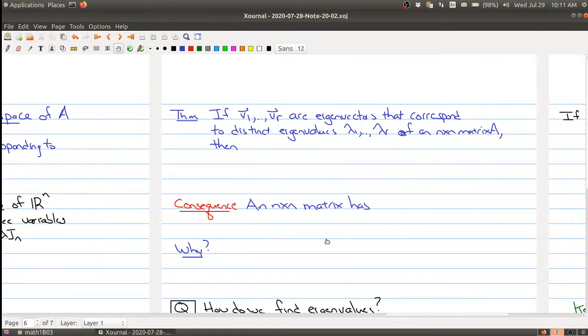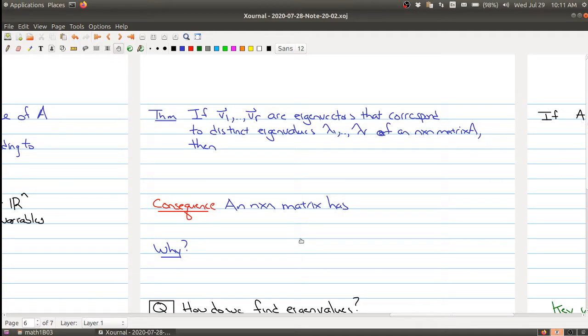Here's another nice theorem that comes out when we're looking at eigenvectors and eigenvalues. In this statement, you have v1, v2 up to vr are eigenvectors that correspond to distinct eigenvalues lambda 1 up to lambda r of an m by n matrix. So lambda 1 is one of the eigenvalues and its eigenvector is v1. Lambda 2 is a different eigenvalue and it has an eigenvector v2, and so on.